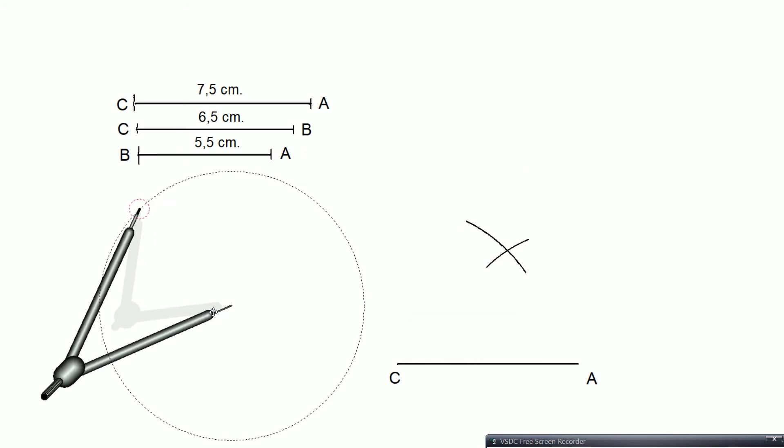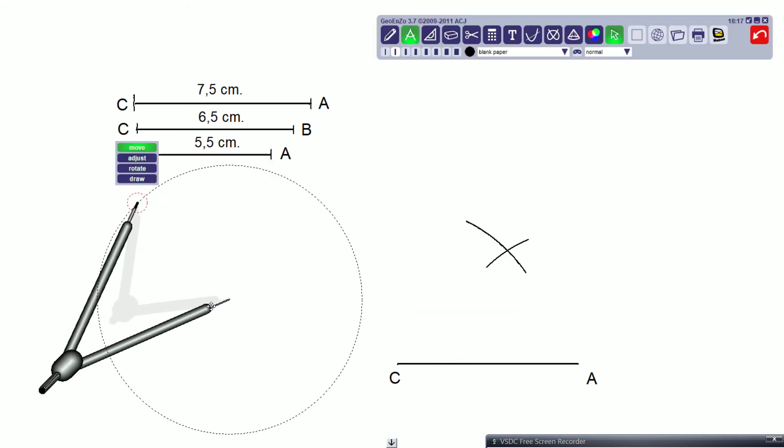So now I have the third vertex of the triangle. That is to say, now I have the B vertex.